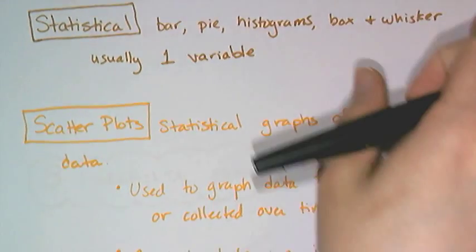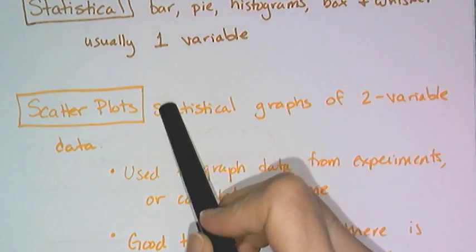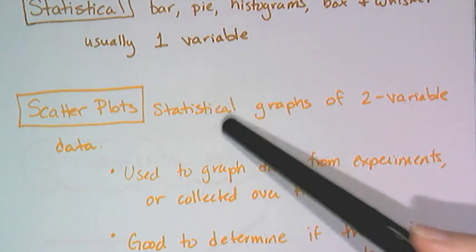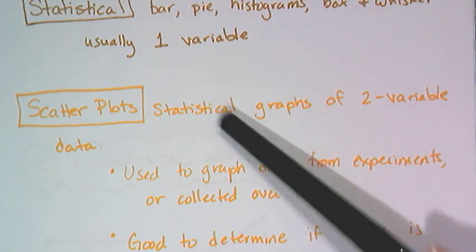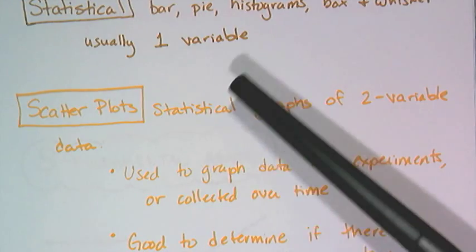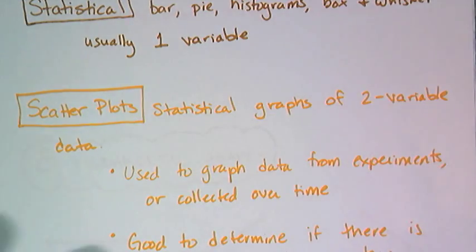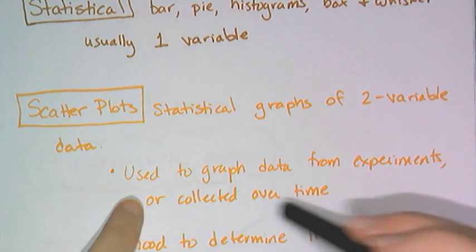Now the type of statistical graph you will see in algebra is called a scatter plot, and these are statistical graphs of two variable data. So they are used to graph the data you get from say an experiment or data that you collect over time.